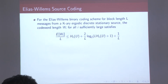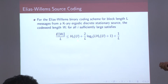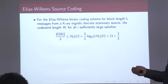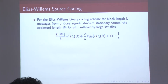This is an upper bound on expected codeword length. We have already shown the lower bound — it is lower bounded by the entropy rate. As L goes to infinity this upper bound is pretty close to the entropy rate. So this is a fairly good coding scheme. Let us prove that expected codeword length per letter is upper bounded by a specific expression for the Elias-Williams source coding scheme.